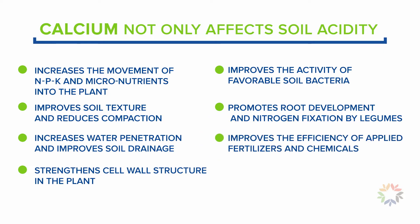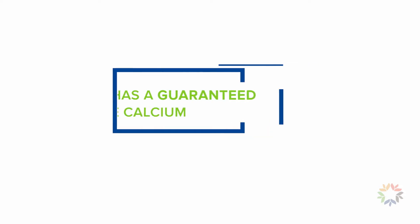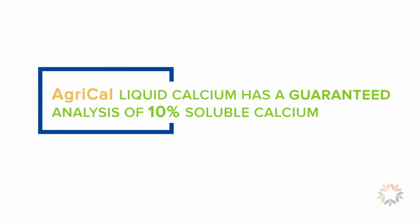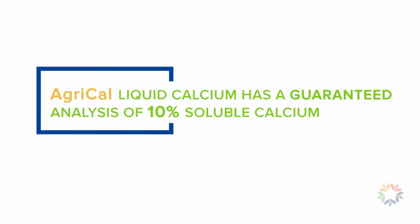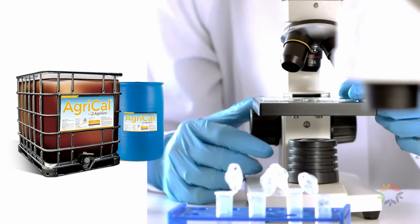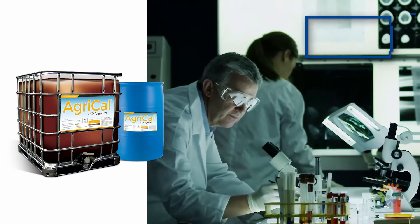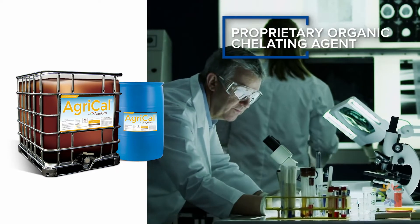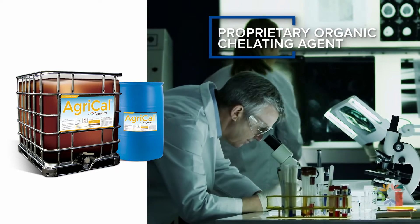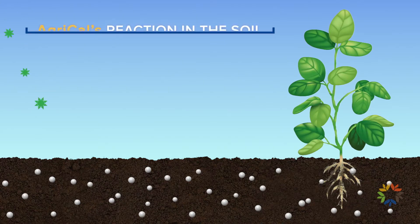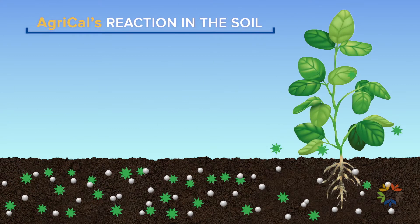AgriCal liquid calcium has a guaranteed analysis of 10 percent soluble calcium. But unlike other calcium products, AgriCal is formulated with a proprietary organic chelating agent that gives it the unique ability to release insoluble calcium from the soil while providing immediate calcium to the plant.